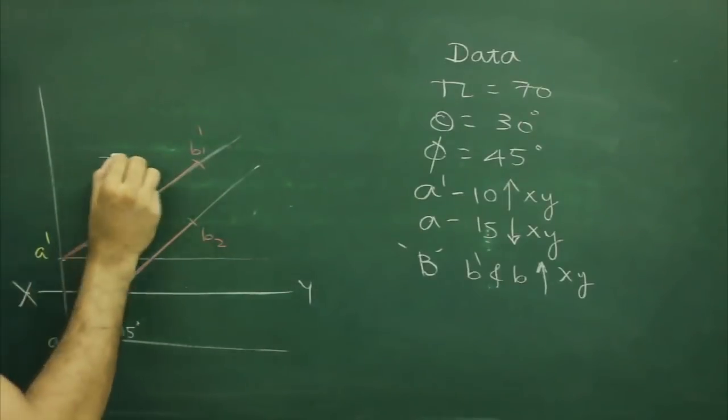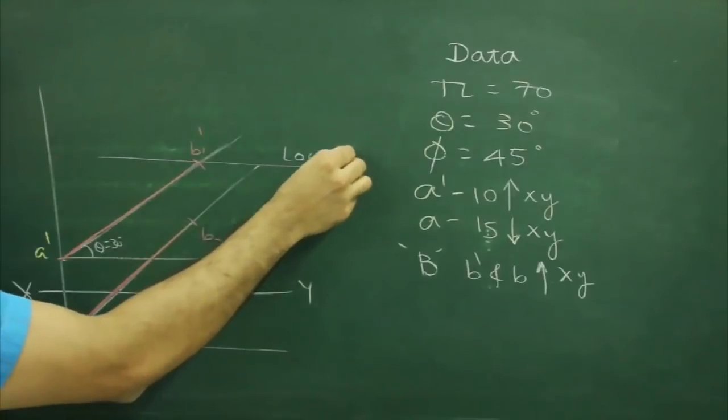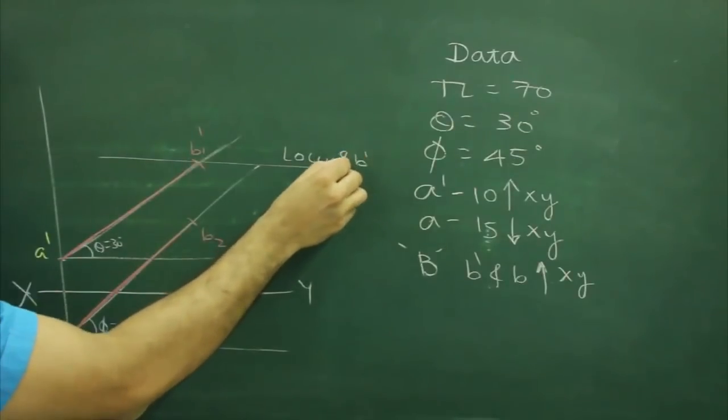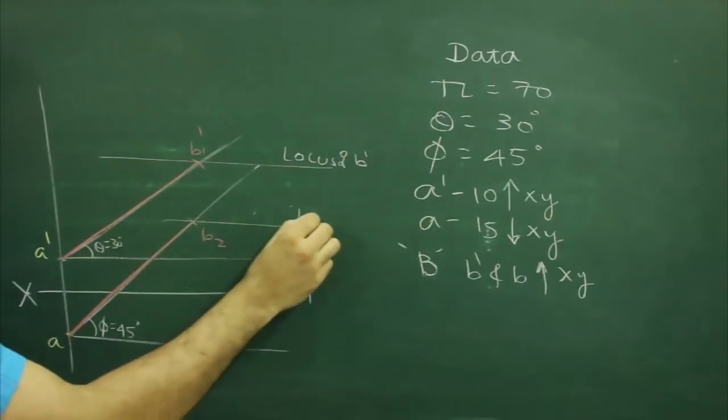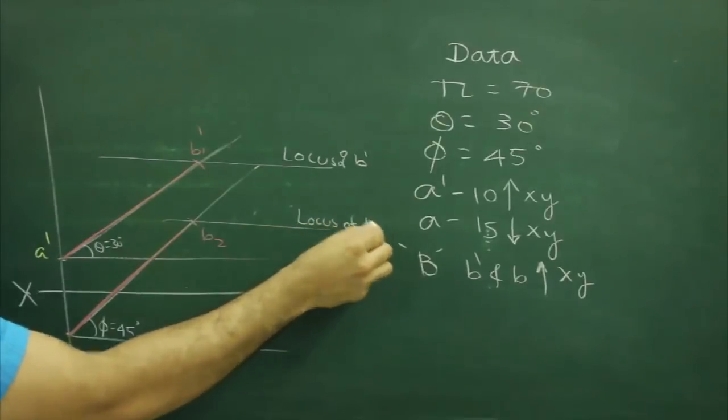We can draw locus. This is locus of b dash and this is locus of b.